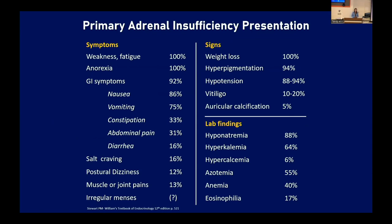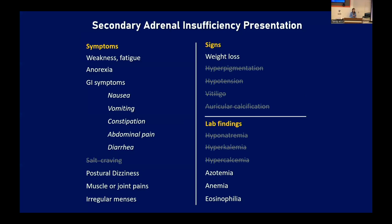Symptoms of primary adrenal insufficiency include weakness, anorexia, GI upset, weight loss, hyperpigmentation, low blood pressure, and electrolyte disturbances. With secondary adrenal insufficiency, we lose some of those findings — because mineralocorticoid production is preserved, we lose many of the electrolyte findings and hypotension. Hyperpigmentation is associated with chronic ACTH exposure, which you wouldn't have with secondary insufficiency, so you won't see that in secondary cases.